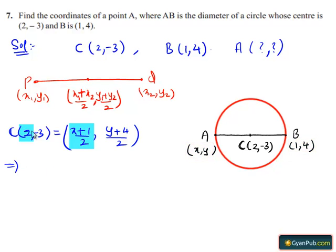This implies, first equating the x coordinates, we get 2 = (x+1)/2 and now equating the y coordinates, we get -3 = (y+4)/2.